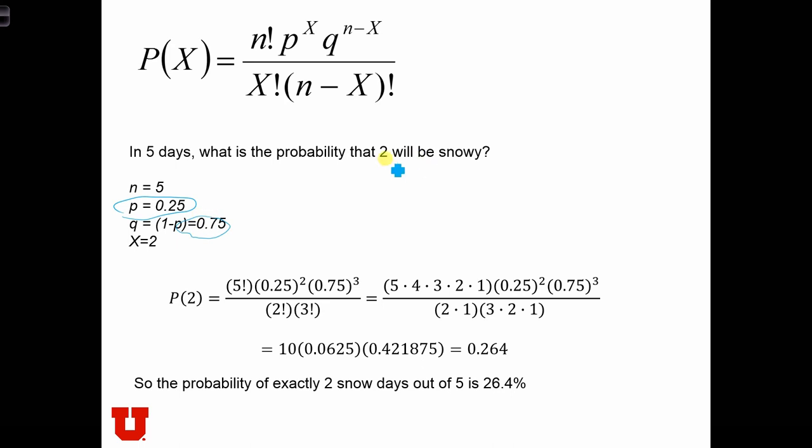We want to know the probability of having 2 successes, so x is 2, out of the next 5 days, so we have 5 trials, and n equals 5.